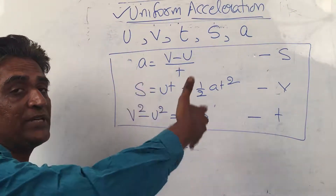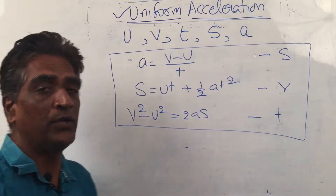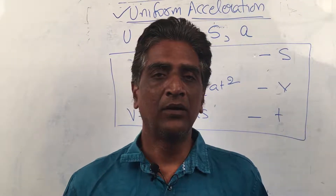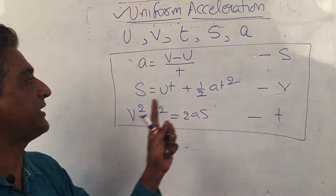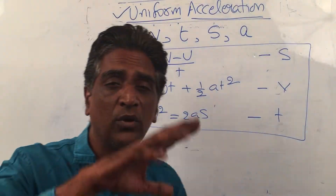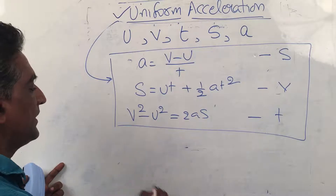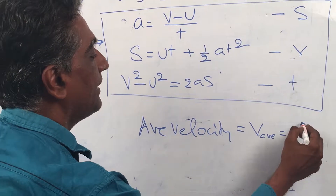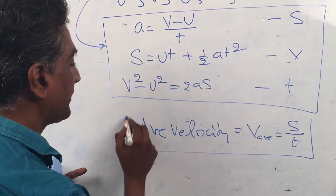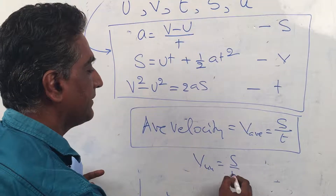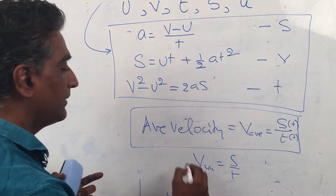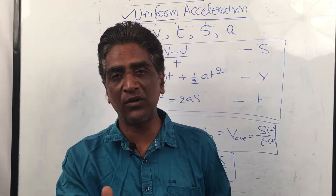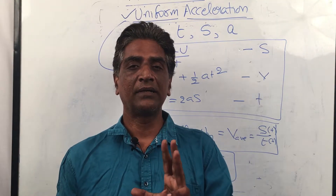When you put in numbers and work through problems, you will understand these equations more deeply. Together with the average velocity equations v_avg = s / t for uniform acceleration and v = s / t for uniform velocity, you now have everything needed to solve any kinematics problem. Thank you so much — this is Narendra Kumar from Narendra Academy.